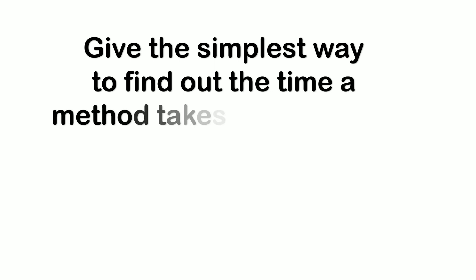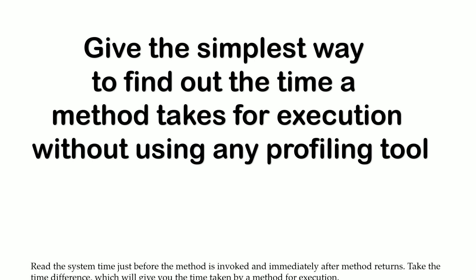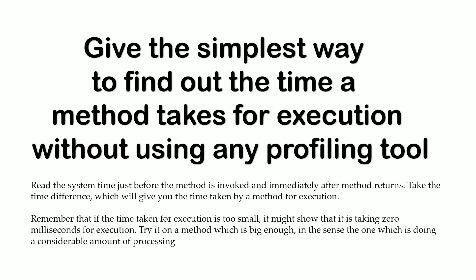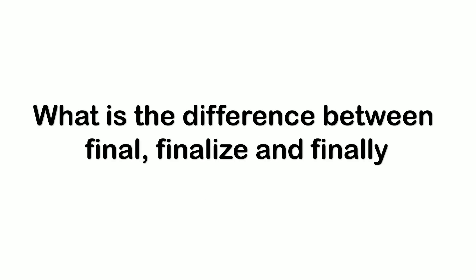The next question was: give the simplest way to find out the time a method takes for execution without using any profiling tool. The best approach is to capture the time at the first line and the last line of the method and print the difference — that gives the time taken by the method. Then: what is the difference between final, finalize, and finally? Final means a class can't be inherited, a final method can't be overridden, and a final variable's value can't be changed. Finally is used to execute important code whether an exception is handled or not. Finalize is used to perform cleanup processing just before an object is garbage collected.